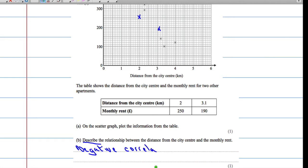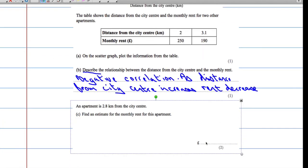Negative correlation, but also we need to describe what's actually going on. As distance from the city center increases, monthly rent decreases. And that makes sense - as you move further away from a city, the rent is going to get cheaper.